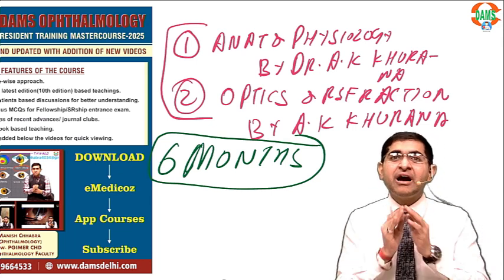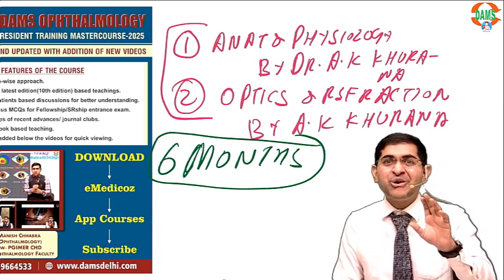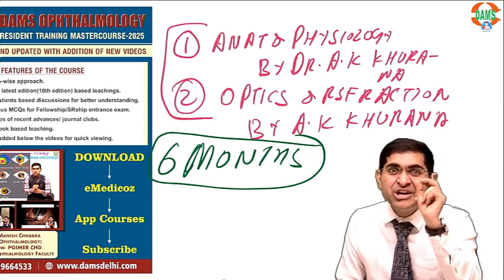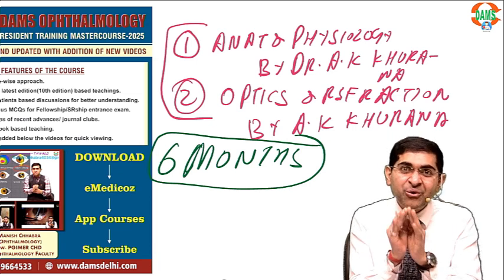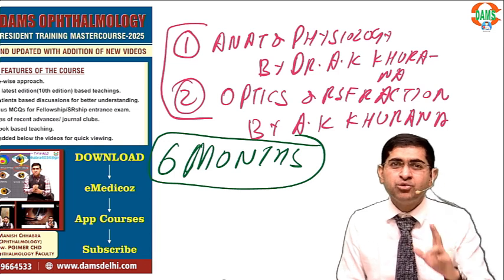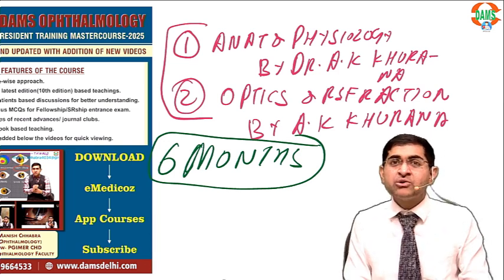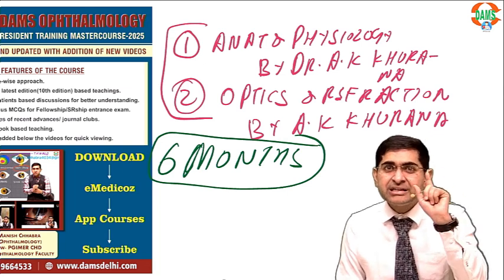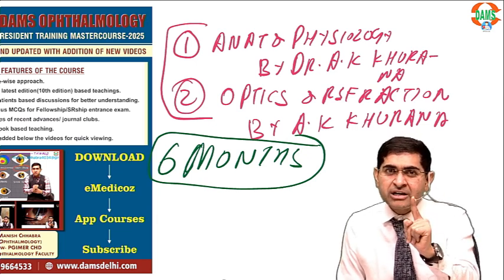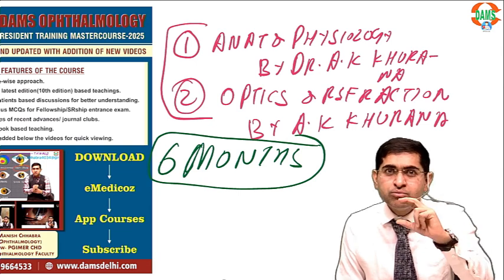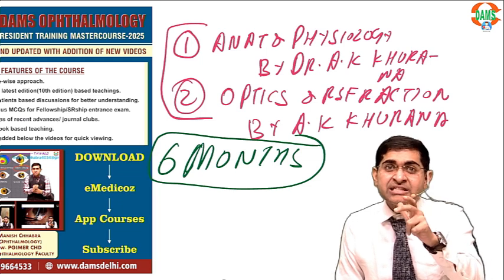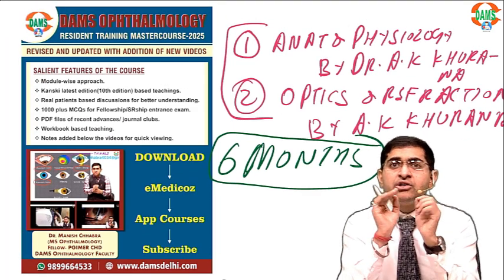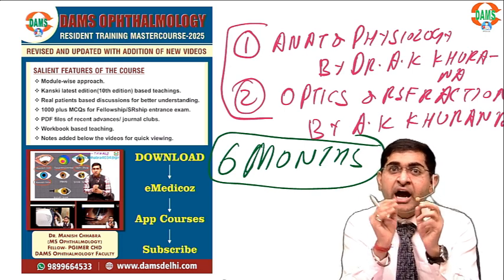I understand that we hardly read ophthalmology in our professional exams. My advice to all of you is to please read Parsons as well — Parsons is a very beautiful book and it will build your concepts. In residency, some students go for Parsons and some go for comprehensive ophthalmology by Dr. A.K. Khurana, but I would suggest going for Parsons for basic concept building, alongside those 2 resident-specific books and Kanski's latest edition.